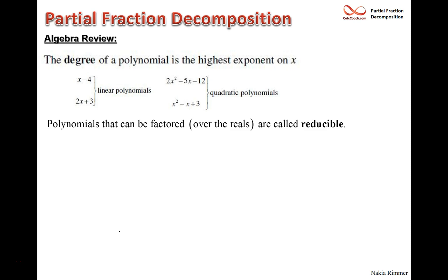We have two quadratics: one is reducible and the other is not. The first one can be factored as (2x)(x) and we need two numbers that multiply to give negative 12 and combine to give 5. We use 4 and 3, giving 8x and 3x, which subtract to give 5 — making it negative 5 — and so it factors.